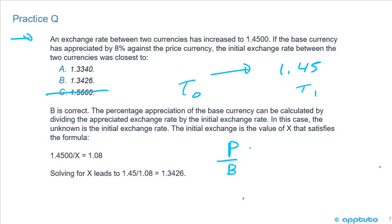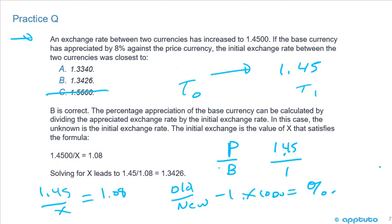Remember, it's the price to the base is how we calculate always. So we have 1.45 over 1 is the new price over the base currency. And what we need to do is we need to figure out what the original price was. And we know that it has increased 8%. So all we're going to do is old price over new price minus 1 times 100, and that's going to give us our percentage change in whole numbers. So we're just going to solve for X. We're going to do our new price, 1.45, over our old price, and that's going to equal 1.08 if I just take a little bit of a shortcut. So 1.08X is going to equal 1.45.